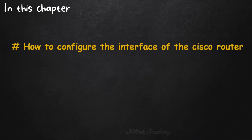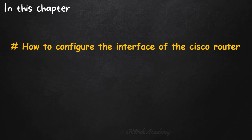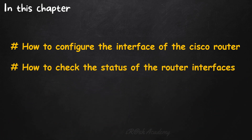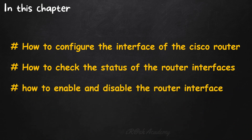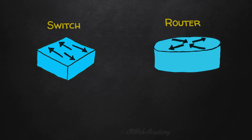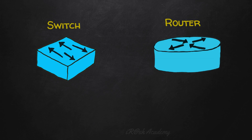In this chapter, we are going to discuss how to configure the interface of the Cisco router, how to check the status of the router interfaces, and how to enable and disable the router interface. In the previous videos, we were talking about the basic configuration on network switches. In this chapter, we will talk about the interface configuration on a Cisco router.